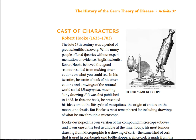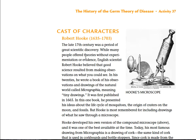The late 17th century was a period of great scientific discovery. While many people offered theories about experimentation or evidence, English scientist Robert Hooke believed that good science resulted from making observations on what you could see. In his 20s, he wrote a book on observations and drawings of the natural world called Micrographia, meaning tiny drawings. It was first published in 1665. In this one book, he presented his ideas about the life cycle of mosquitoes, the origin of craters on the moon, and fossils.